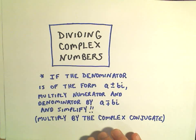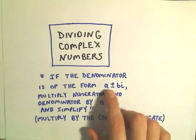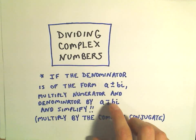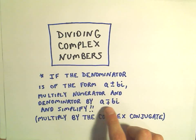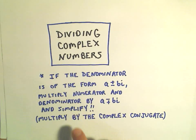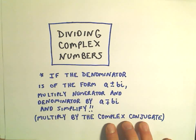The trick is, in this case, you multiply the numerator and the denominator by - if it's a plus, you use a minus bi; if it's a minus bi, we use a plus bi - and then we just have to simplify it. This is what's known as multiplying by the complex conjugate.